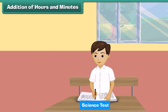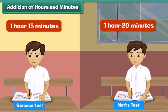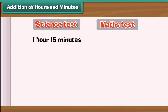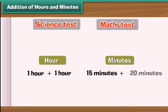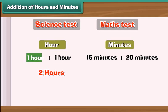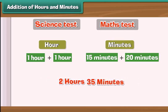Addition of hours and minutes. Let us now learn to add two times. Raju completes his science test in 1 hour 15 minutes and his maths test in 1 hour 20 minutes. What is the total time taken by Raju to write the two tests? To calculate the total time, we add the hours together and the minutes together. On adding the hours we get 2 (1 plus 1), and on adding the minutes we get 35 (15 plus 20). So the total time taken by Raju to write the two tests is 2 hours 35 minutes.